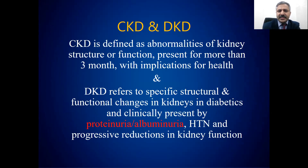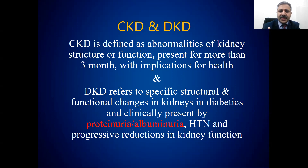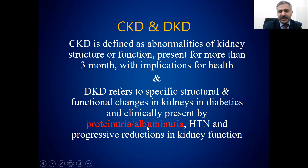Chronic kidney disease is defined as abnormalities of kidney structure and function present for more than three months with implications for health. If those abnormalities are secondary to diabetes, that would be diabetic kidney disease. Diabetic kidney disease or diabetic nephropathy usually clinically manifests in the form of proteinuria or albuminuria with hypertension and progressive reduction in kidney function — that could be a rise in creatinine or decrease in GFR.